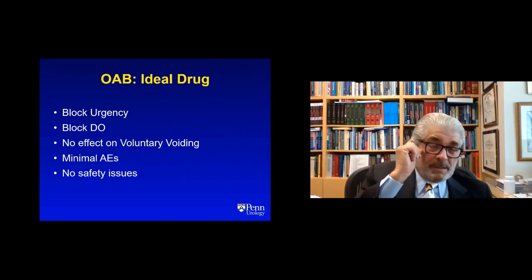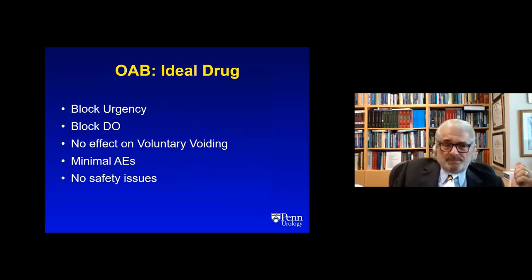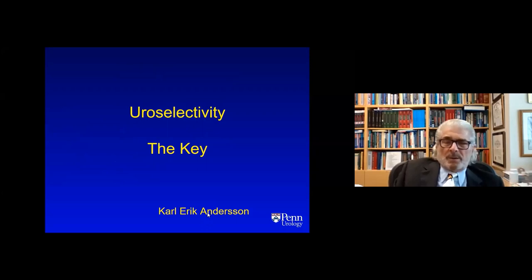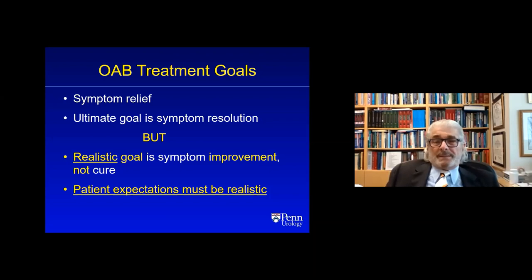We start generally with behavioral modification and drugs. What's the ideal drug? Everyone would agree the key concept is uroselectivity — just affect the bladder, don't affect anything else. We all know that's not entirely possible with drugs, but it's certainly a goal. It's important that the patient understand treatment goals: a realistic goal is symptom improvement. If the patient's expectations are not realistic, they will be disappointed with treatment and more likely to discontinue it.